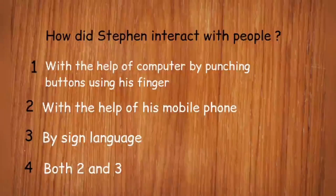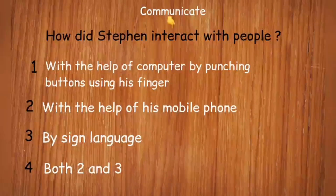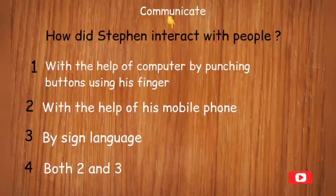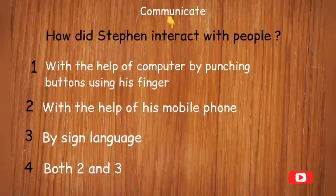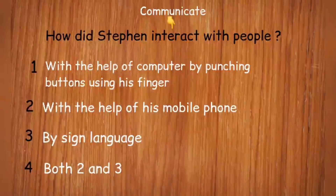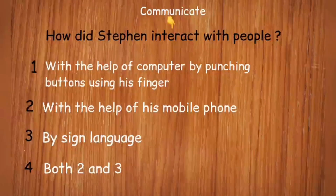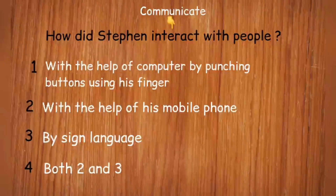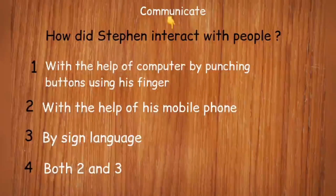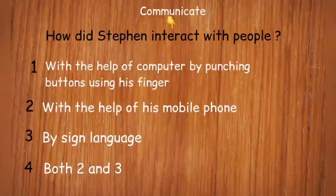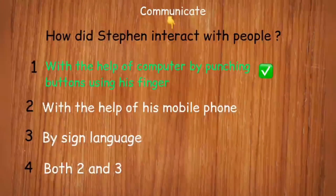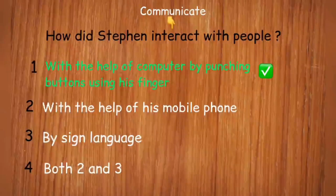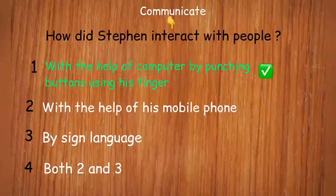How did Stephen Hawking interact with people? The options are: with the help of a computer by punching buttons using his finger; with the help of his mobile phone; by sign language; or both options two and three. Stephen's body was completely paralyzed and he had lost his voice. He could move only his finger, which he used to punch buttons on the computer, and a voice synthesizer spoke to people on his behalf.